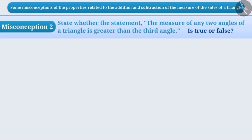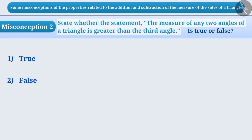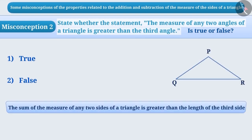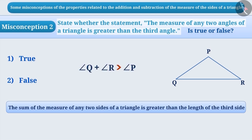Misconception 2: State whether the statement 'The measure of any two angles of a triangle is greater than the third angle' is true or false. Some children think that because the sum of any two sides of a triangle is greater than the third side, the sum of any two angles will also be greater than the third angle. With this misconception, they give option 1 as the answer, but this is incorrect.